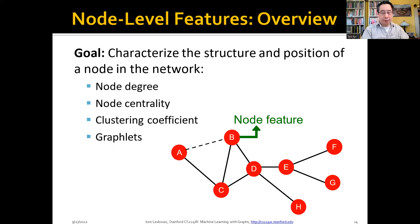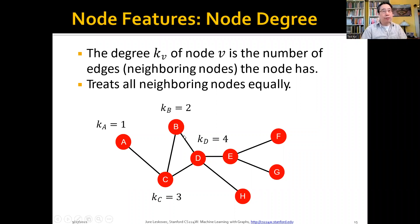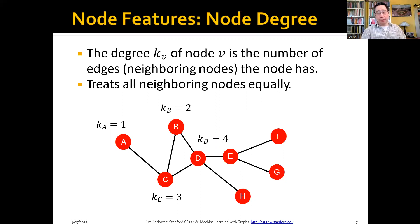Starting with the simplest thing — node degree. If you're looking at a Twitter network and trying to find celebrities, one of the first things you might do is look at people with the most followers. That's the degree — the number of edges going into that node. For Twitter, that's probably good enough to identify celebrities. However, one thing you're doing is treating all nodes equally — all followers have equal weight.